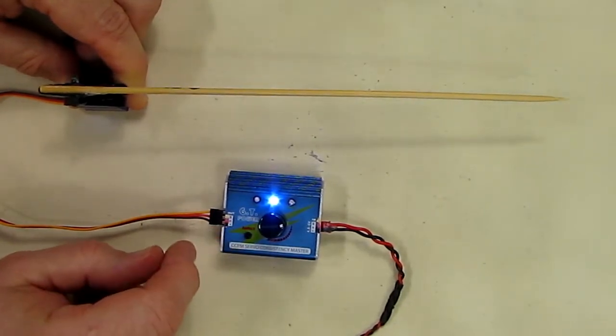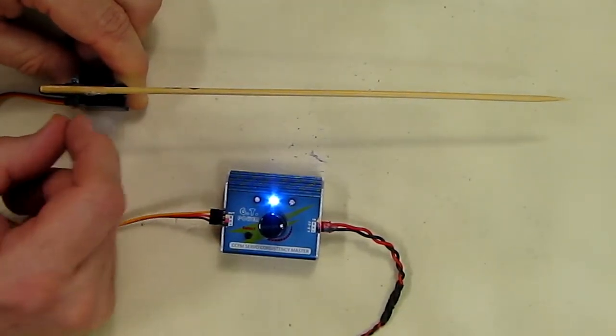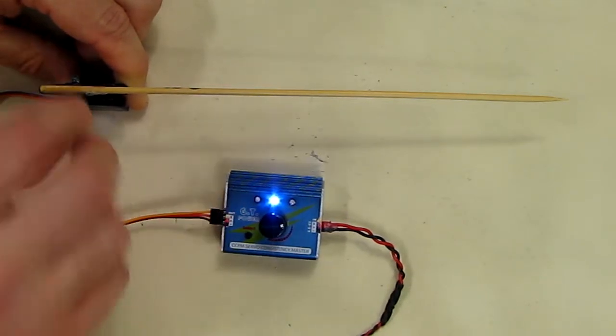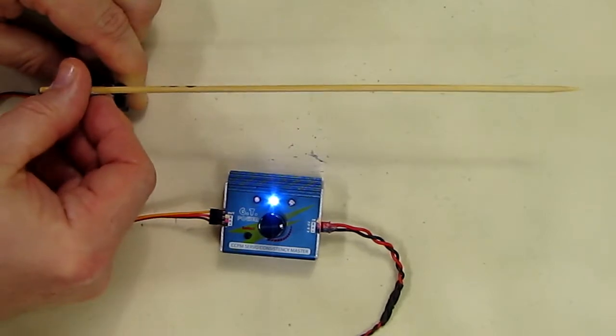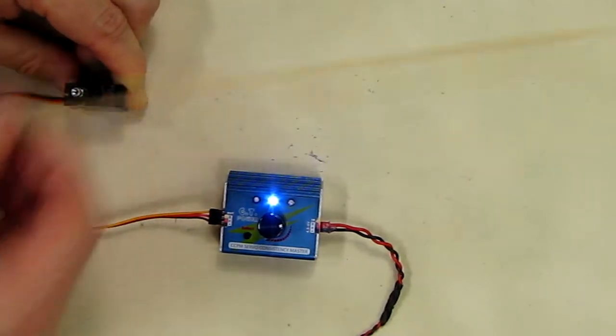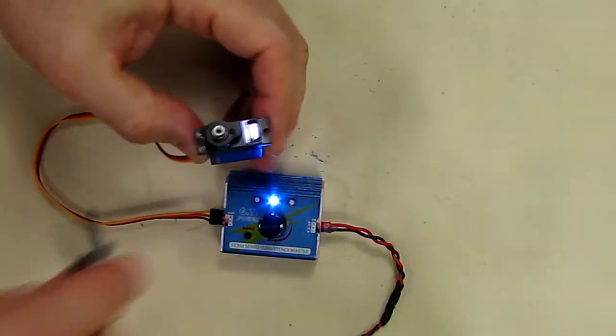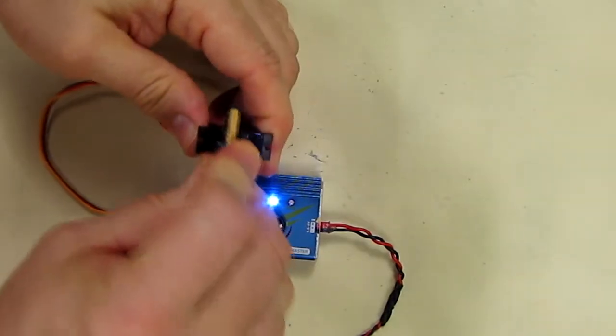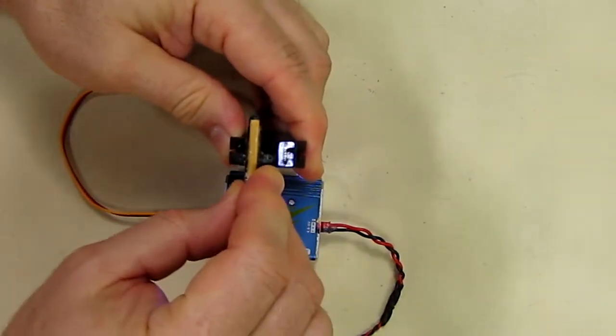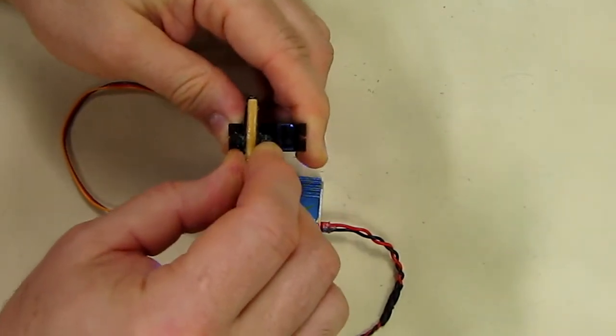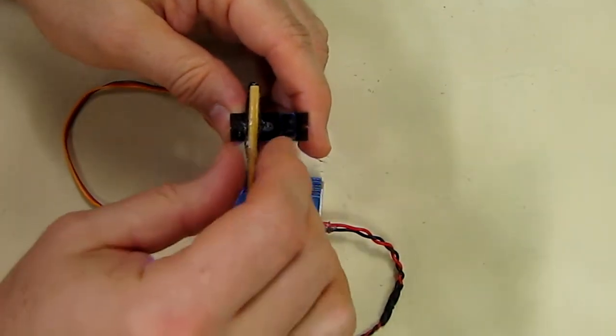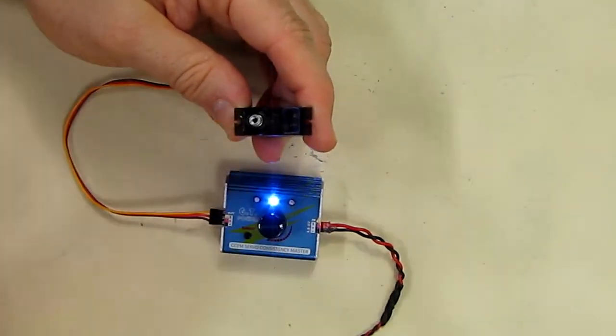You can see it returns to center quite nicely. Now because this is digital, if you give it some resistance, it will offset that resistance quite nicely. If you put some force on this, a typical analog servo will not be able to do this as well. This gives positive feedback, pushing in the opposite direction that I'm pushing.